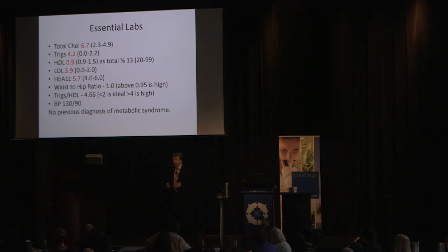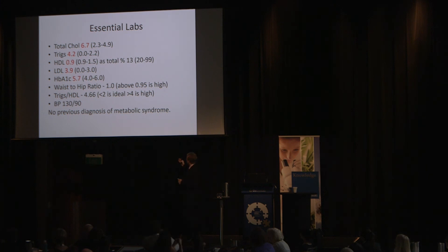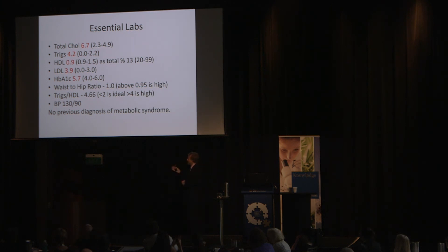Blood tests came back: total cholesterol 6.7, triglycerides 4.2, HDL 0.9, LDL 3.9, HbA1c 5.7, waist-to-hip ratio 1.0 (above 0.95 is high), triglycerides-to-HDL ratio 4.66 (ideally below 2), blood pressure 130 over 90. No previous diagnosis of metabolic syndrome, but this guy is a metabolic disaster.